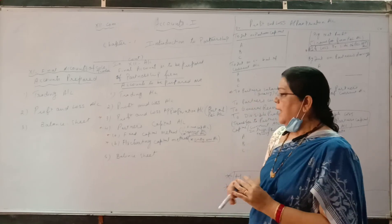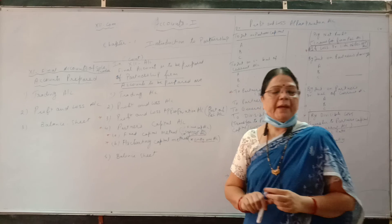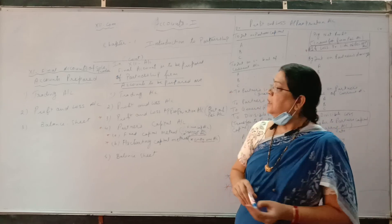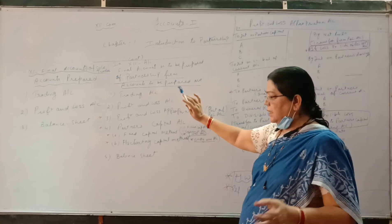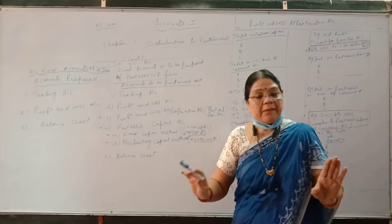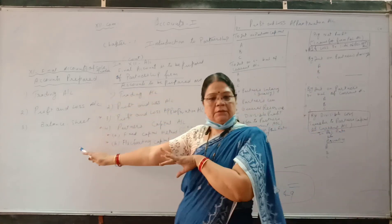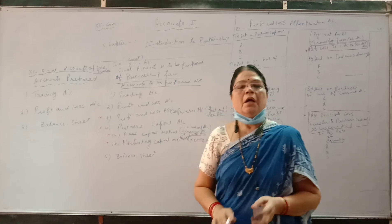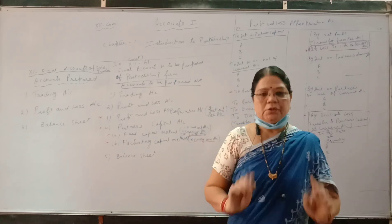The last account we are going to prepare is the balance sheet. Trading account, profit and loss account, and balance sheet are the same as we prepared in 11th standard. There is no change — no change in the adjustments either.